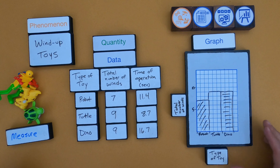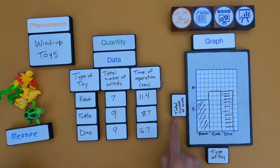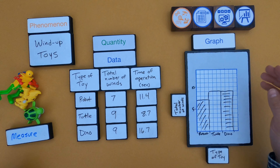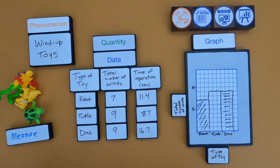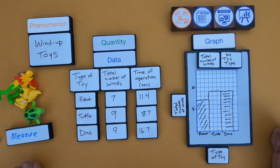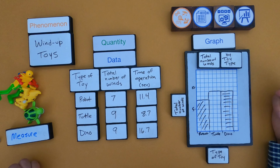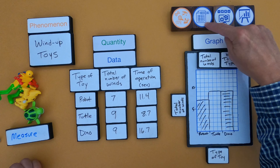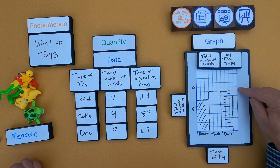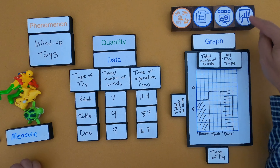For my first graph, I've got type of toy along the bottom and the total number of winds on the y-axis. One thing I'm missing is a title — so I write: 'Total Number of Winds by Toy Type.' You can see it's the same for the turtle and the dino. You should get really good at going from a data table to a graph and then reading from a graph back to a data table.